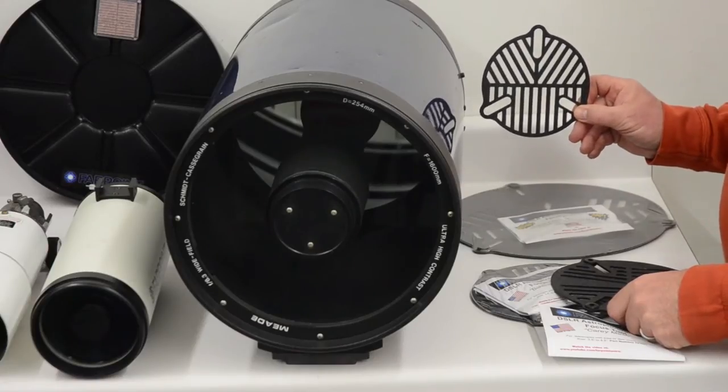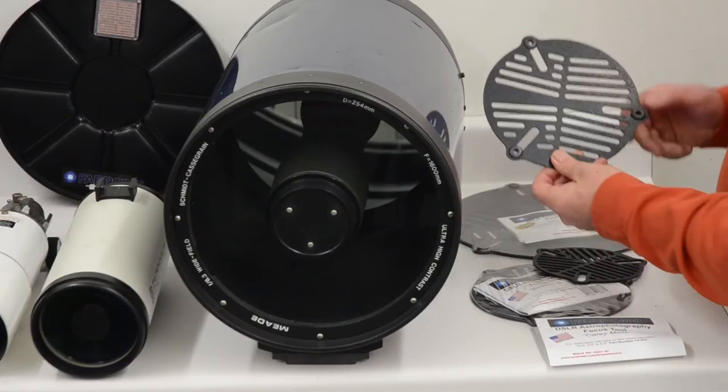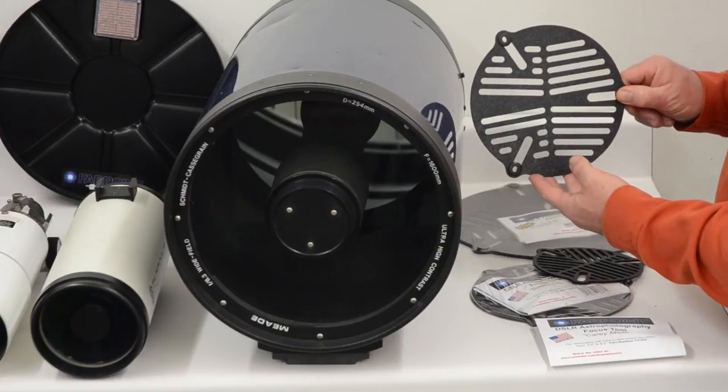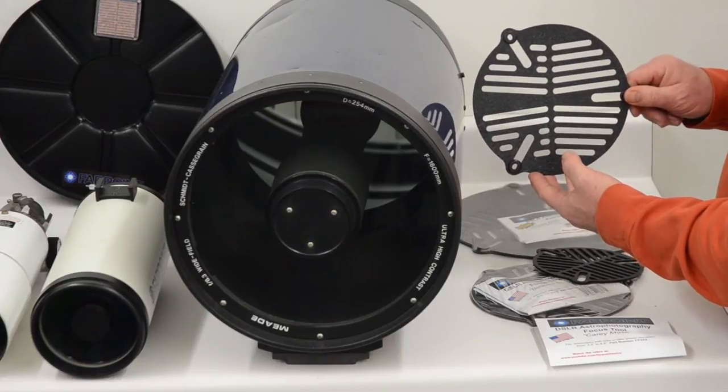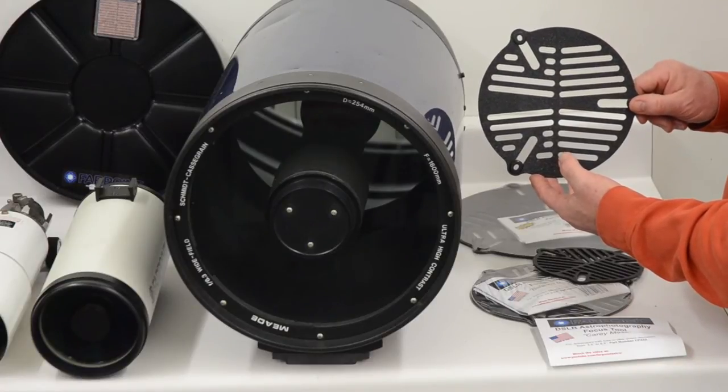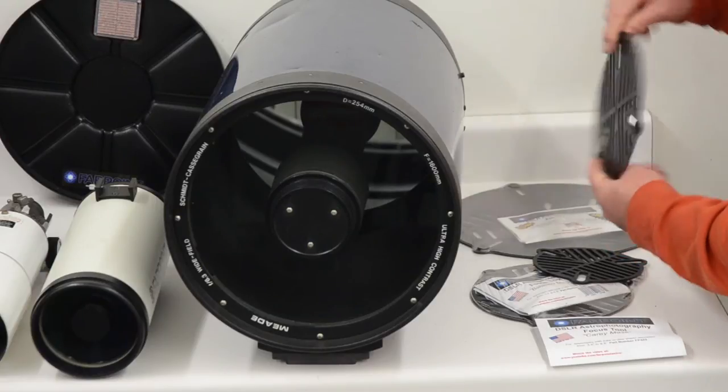Okay, this is a Bahtinov mask, and this is a Carey mask. They have slightly different cut-outs and work in slightly different ways, although they both do your focusing for you. So which way should you orient them? Well, on the one hand, it doesn't really matter.